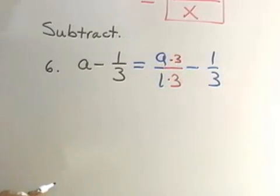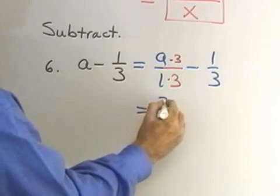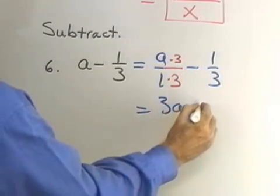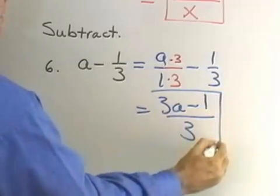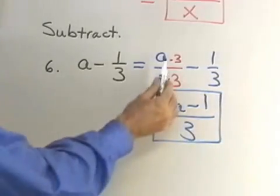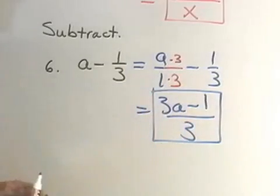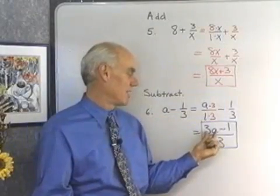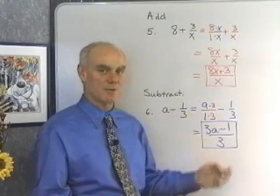I multiply the numerator and denominator of this fraction by 3, and I end up with 3a minus 1 all divided by 3. 3a minus 1 divided by 3, because a times 3 is the same as 3a, and my standard way to write that term right there would be 3 times a.